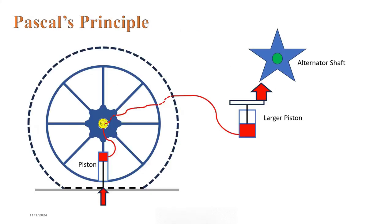Using Pascal's principle, pistons can be sized to amplify the force applied at the smaller piston to spin an alternator shaft upon impact with the larger piston rod.